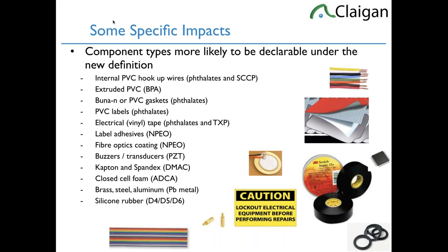Bisphenol A (BPA) is often associated with polycarbonate, but polycarbonate is usually fully reacted with only trace BPA remaining. Where we actually see BPA at higher concentrations is as an antioxidant for plasticizers in extruded PVC. Nitrile rubber, PVC gaskets, and soft parts commonly contain phthalates. PVC labels used for safety are very commonly phthalated. Electrical tape also contains phthalates and tricresyl phosphate. Label adhesives often contain the surfactant nonylphenol ethoxylate (NPEO), though one could argue the adhesive is a chemical and not declarable until adhered to the product.